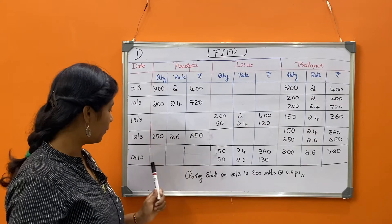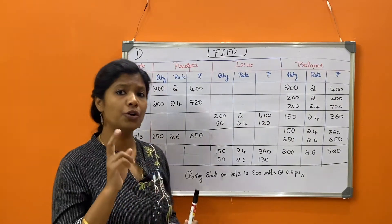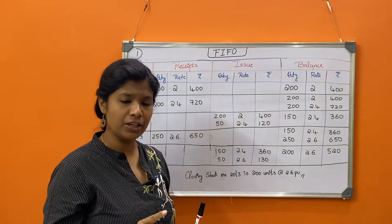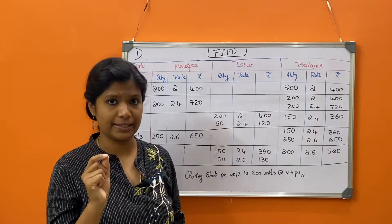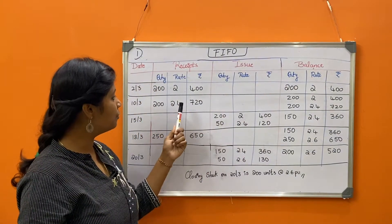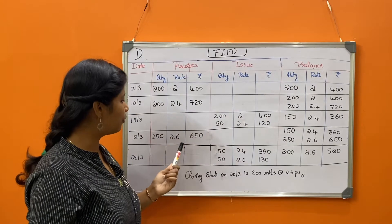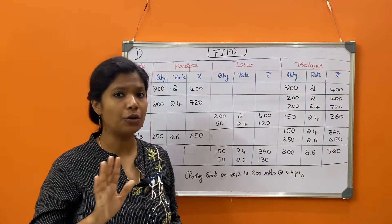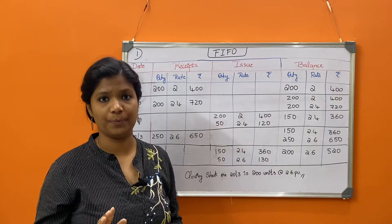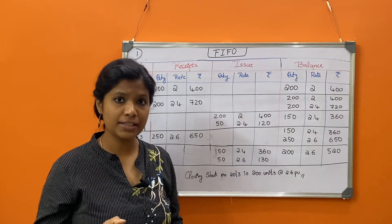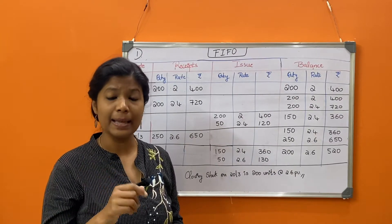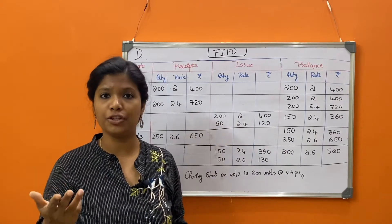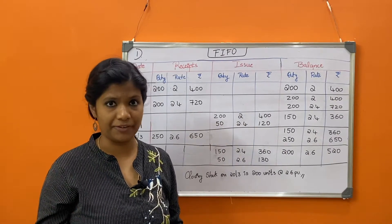The last date given is 20th March — they have issued 200 units. Note that whenever goods are received, the rate is given in the question (2, 2.4, 2.6), but when goods are issued, the rate is not provided — it is up to us to determine the rate depending on the method: FIFO, weighted average, or simple average.